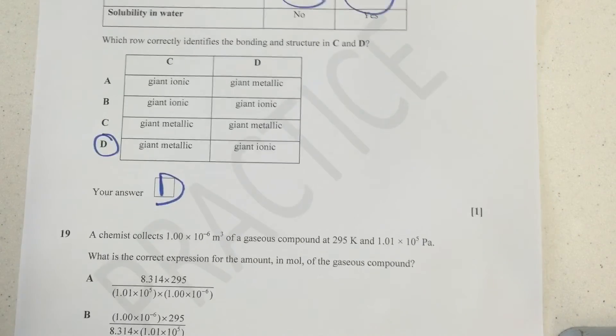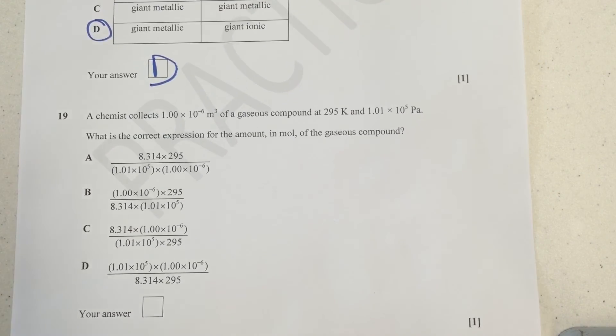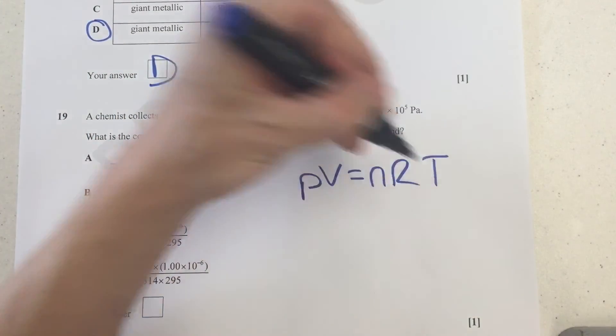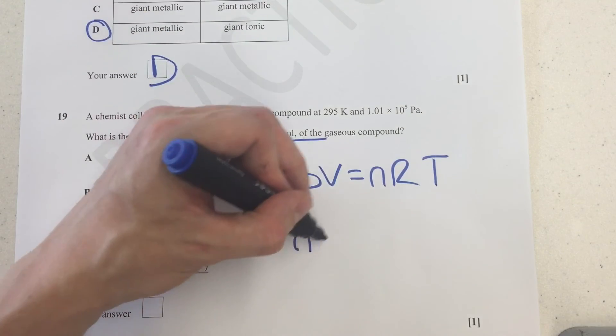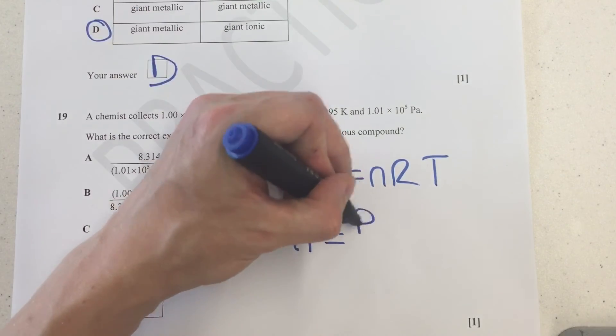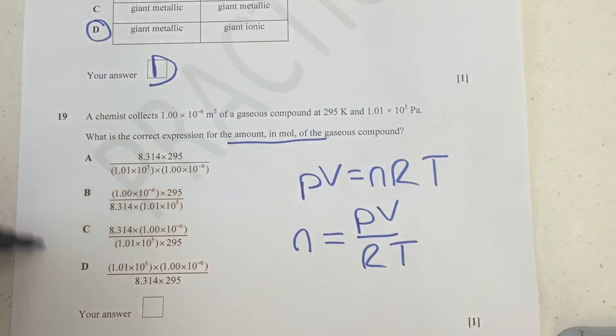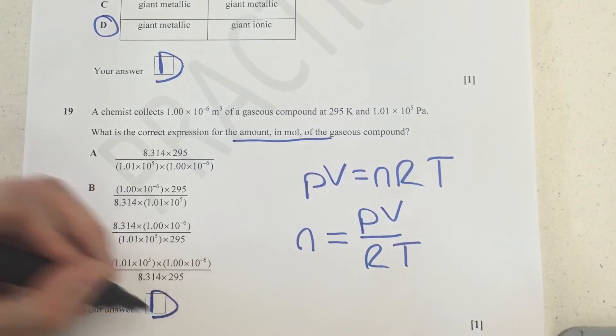Looking down here, this is the ideal gas equation question. For the ideal gas equation, we are looking at PV equals nRT, and it wants the calculation for mol, which would be mol equals PV divided by RT, and the only one here that actually represents that is D. So the correct answer here needs to be D.